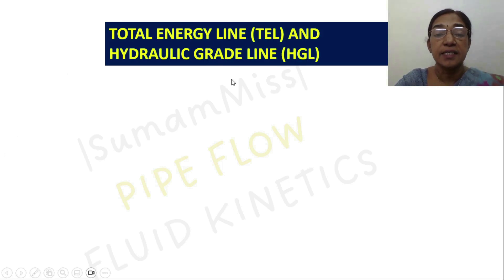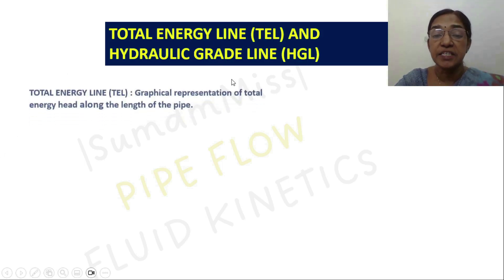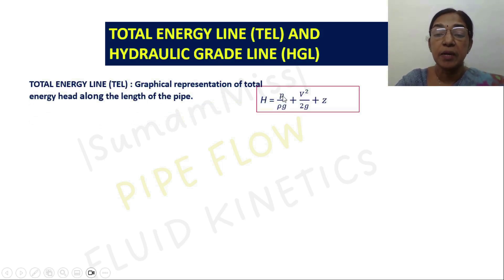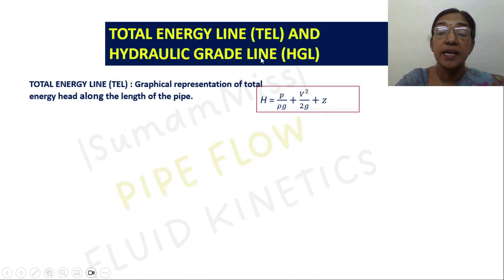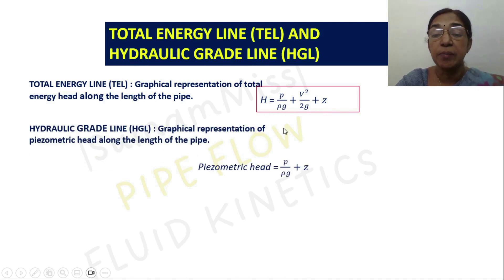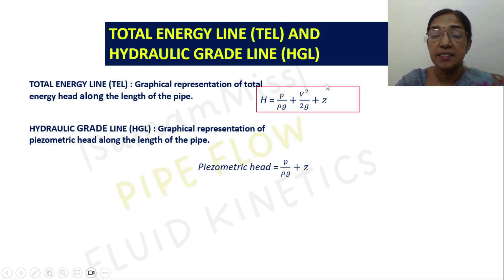The total energy line is the graphic representation of total energy along the length of the pipe. Total energy is equal to P over ρg plus v² over 2g plus z. The hydraulic gradient line is the graphic representation of the piezometric head along the length of the pipe. Piezometric head equals P over ρg plus z. The difference between the total energy line and hydraulic gradient line is the velocity head.